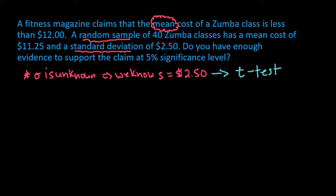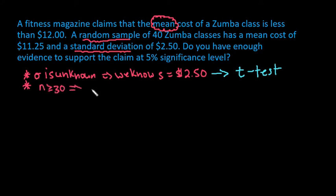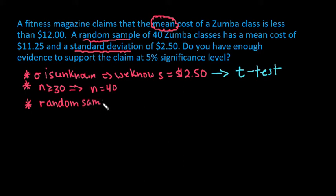The conditions for different tests are different, so please make sure that you refer to your textbook for all conditions and expectations required for your course. For the textbook I'm currently using, the conditions to use the T-test are that you have to know the sample standard deviation instead of the population standard deviation, and you have to have a sample size that is greater than or equal to 30, or it has to be normally distributed. Since n equals 40, we are okay with the sample size condition. The last thing is that we have to have a random sample — randomization is important.